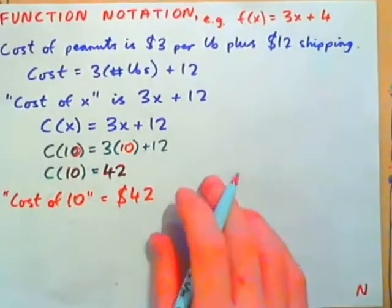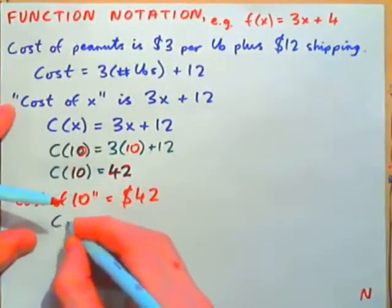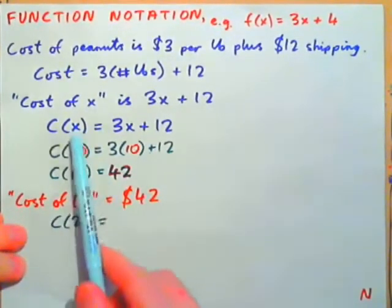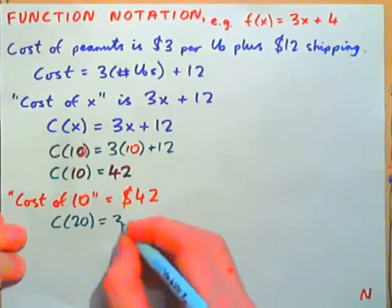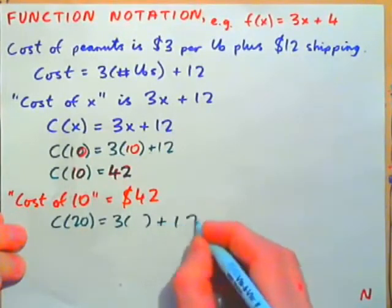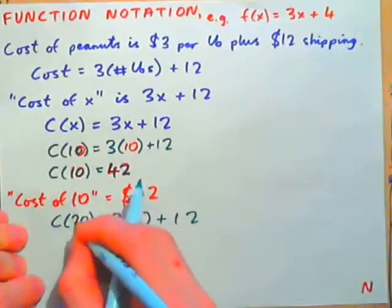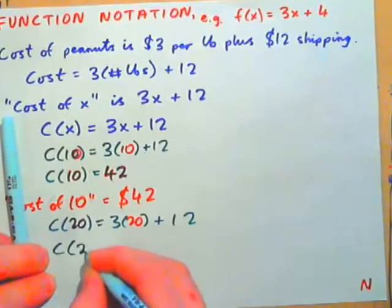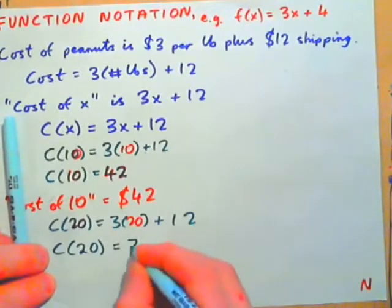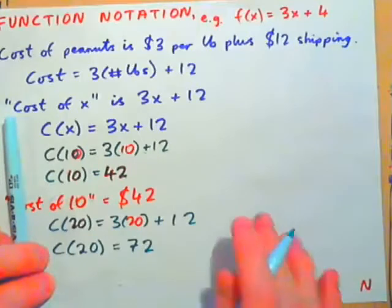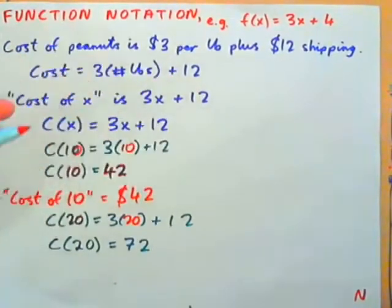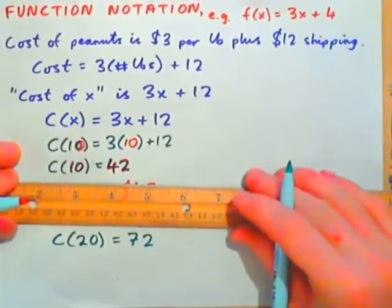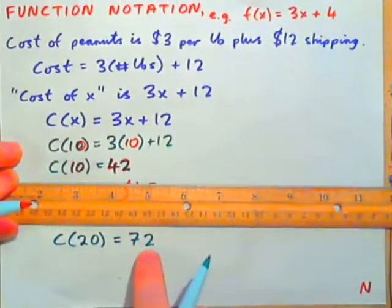So, we might want to get cost of 20. Go ahead and do that. Get cost of 20 pounds. Now, cost of x is 3x plus 12, so that's 3 times x plus 12. 3 times 20 plus 12. So, C of 20 is 60 and 12, 72. So, cost of 20 pounds is $72. C of 20 equals 72.